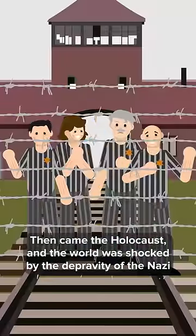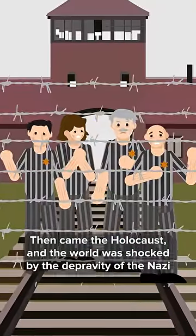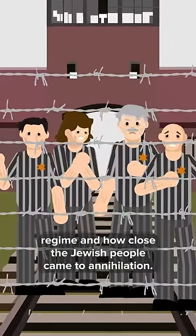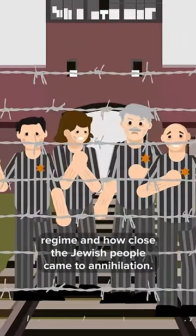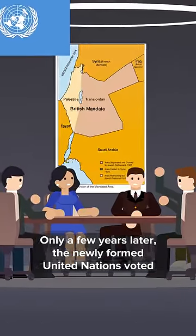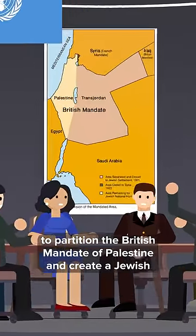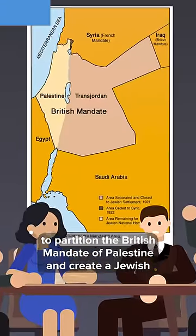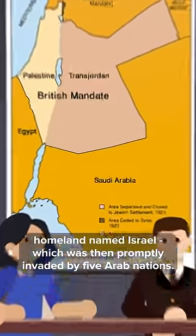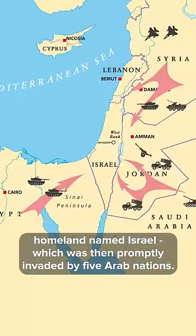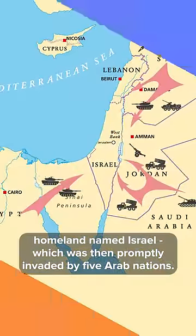Then came the Holocaust, and the world was shocked by the depravity of the Nazi regime and how close the Jewish people came to annihilation. Only a few years later, the newly formed United Nations voted to partition the British Mandate of Palestine and create a Jewish homeland named Israel, which was then promptly invaded by five Arab nations.